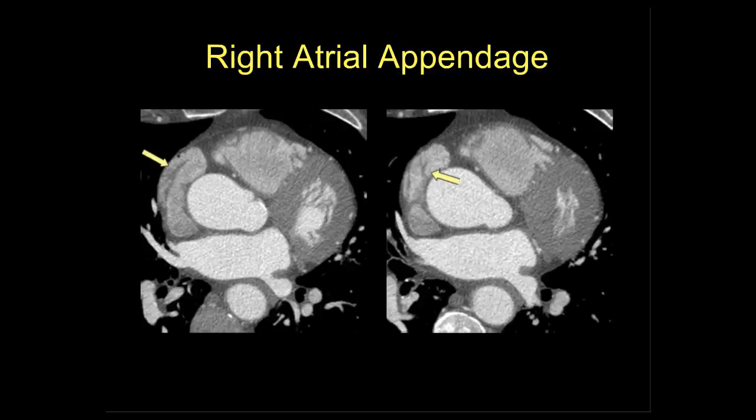These are two images from a patient in which we see linear opacities noted within the lumen of the right atrial appendage, consistent with the pectinate muscles. Oftentimes we don't see fine anatomic detail on the right side of the heart, depending on where you are in your bolus of contrast. If you have a not-so-strong bolus, you may see these, and if we're not aware of them, we may misinterpret them as pathologic.